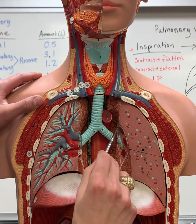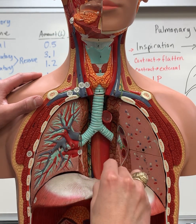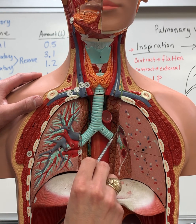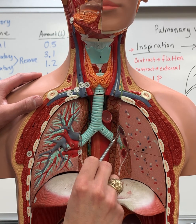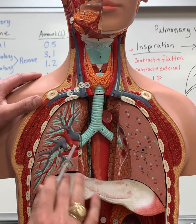If you look at this, this is what's known as the hilum. The hilum contains the primary bronchi, as well as the pulmonary artery, as well as the pulmonary veins.